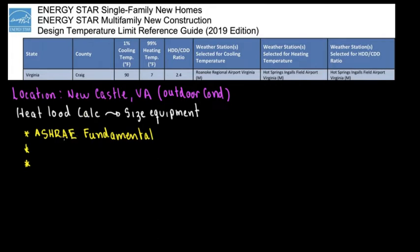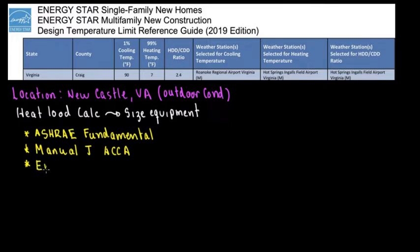The other option is to resort to Manual J, which is a more summarized version of the outdoor design temperatures. Manual J is from ACCA — American Air Conditioning Contractors of America. The other one you can resort to, which is pretty much very handy, is the Energy Star table. It's available for everyone and I'm going to put the link below.